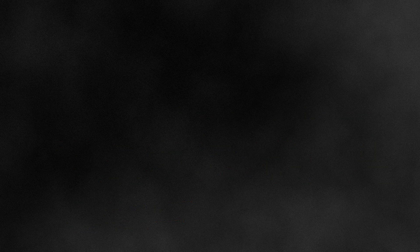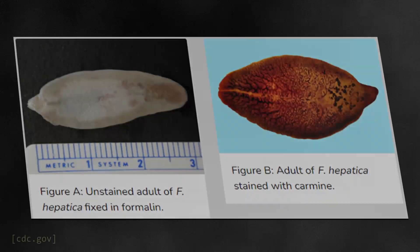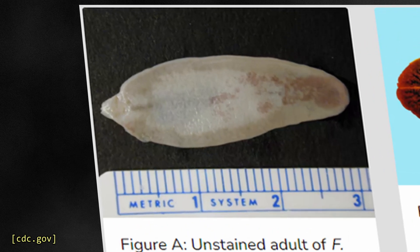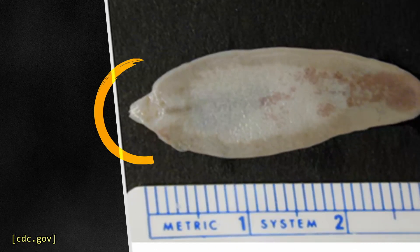Liver flukes in this group are quite large compared to other flukes. They can grow up to 7 cm long and 1.5 cm wide. The adult fluke has a distinct cone-shaped head with prominent shoulders, which marks the anterior portion of the body.